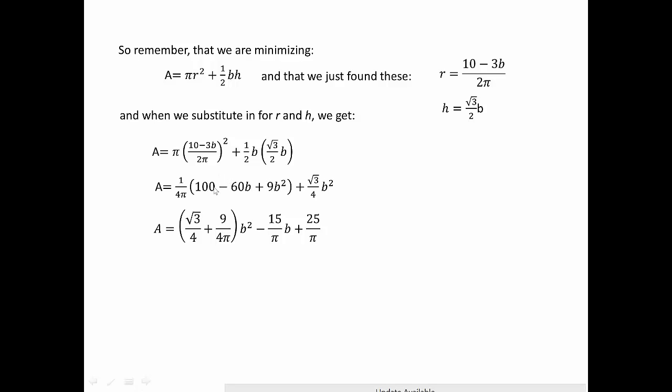If we multiply it out, when I put the b² together: (9/(4π) + √3/4) kind of put them together, this is my quadratic for my area. We know that there's going to be a minimum at -b/(2a), so -(-15/π)/(2 times this), that's about 2.077.